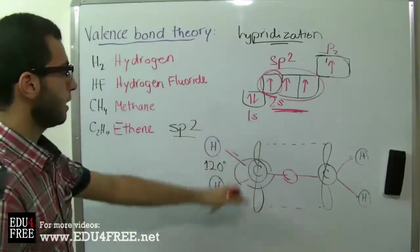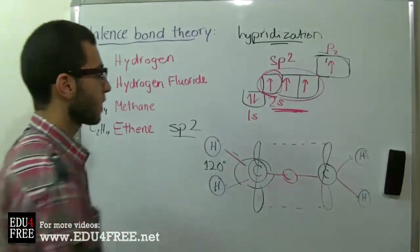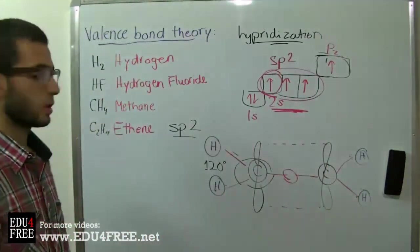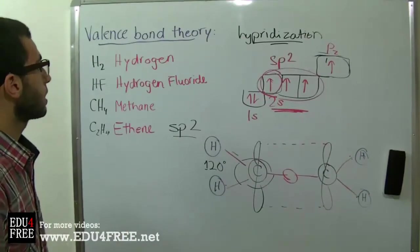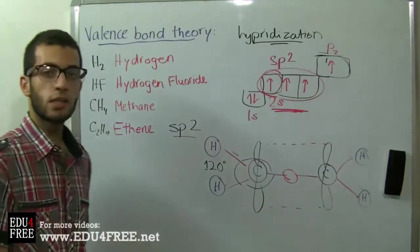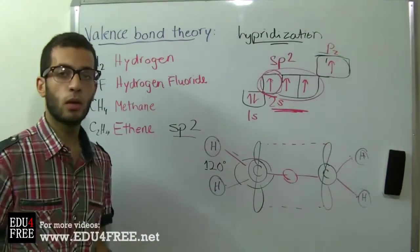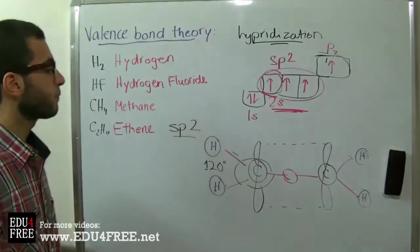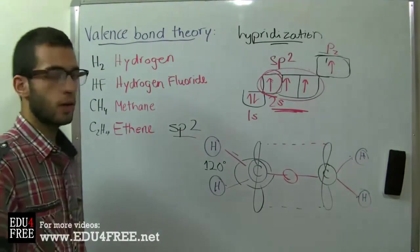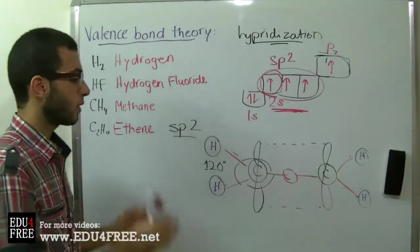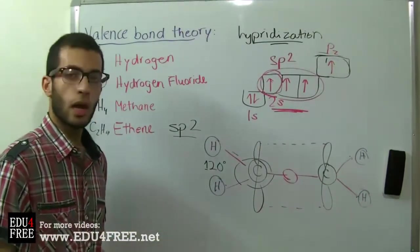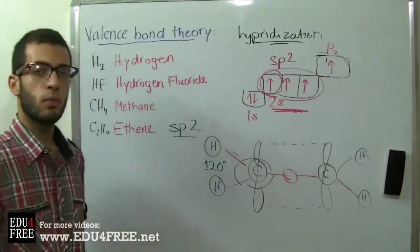This is when the whole molecule reaches a stable state. So that was the valence bond theory. Next time we will talk about the molecular orbital theory, which moves closer to the reality of covalent bond formation between atoms inside a molecule.